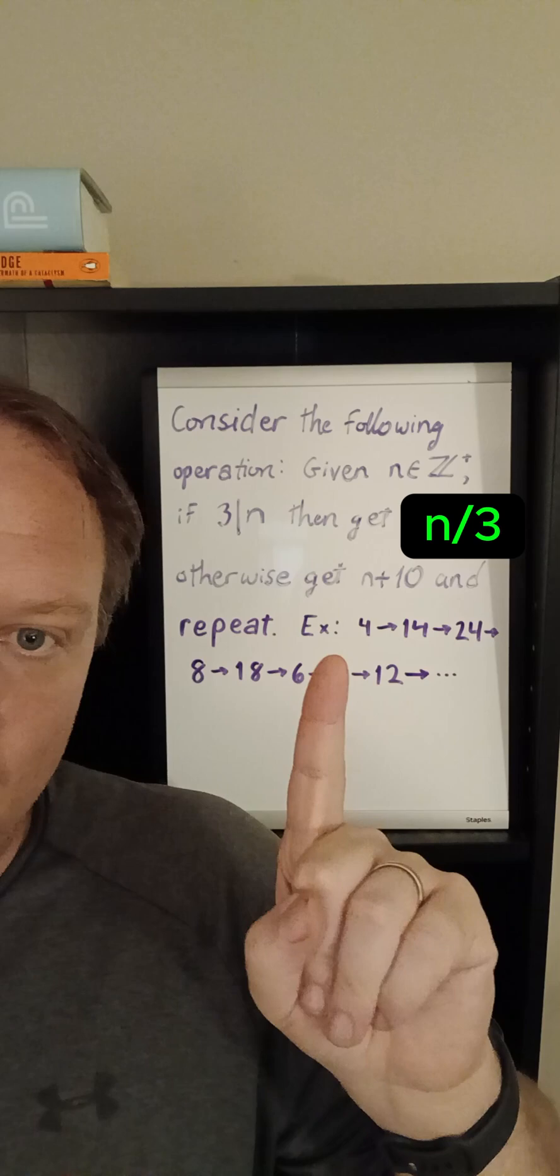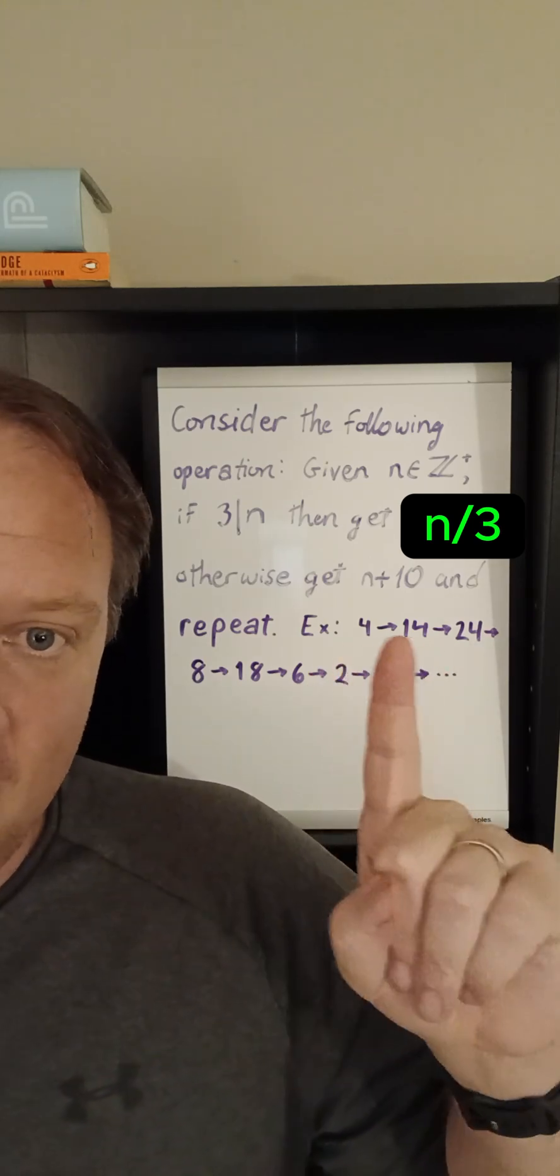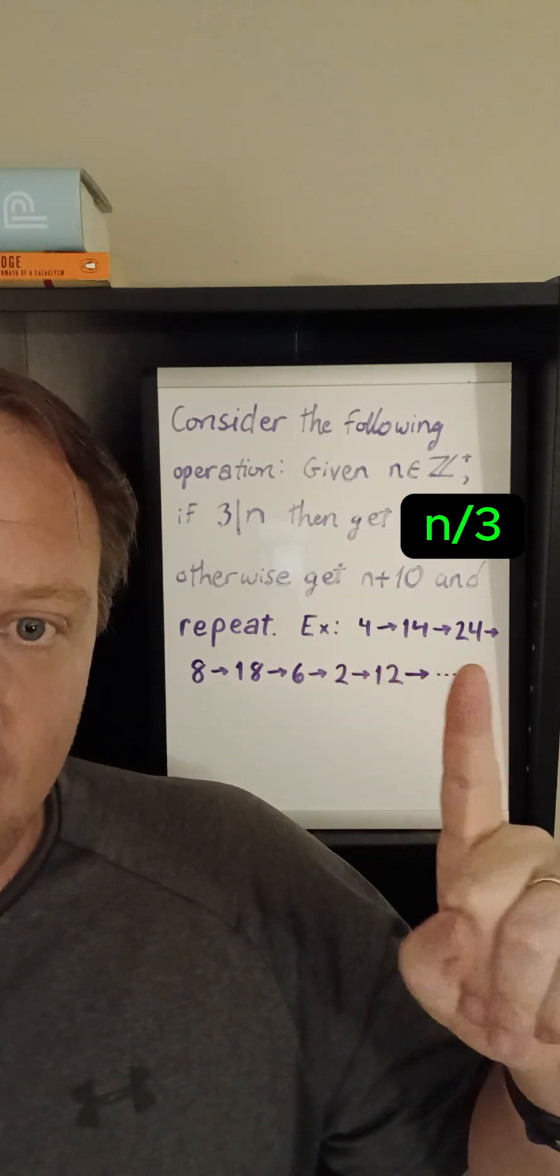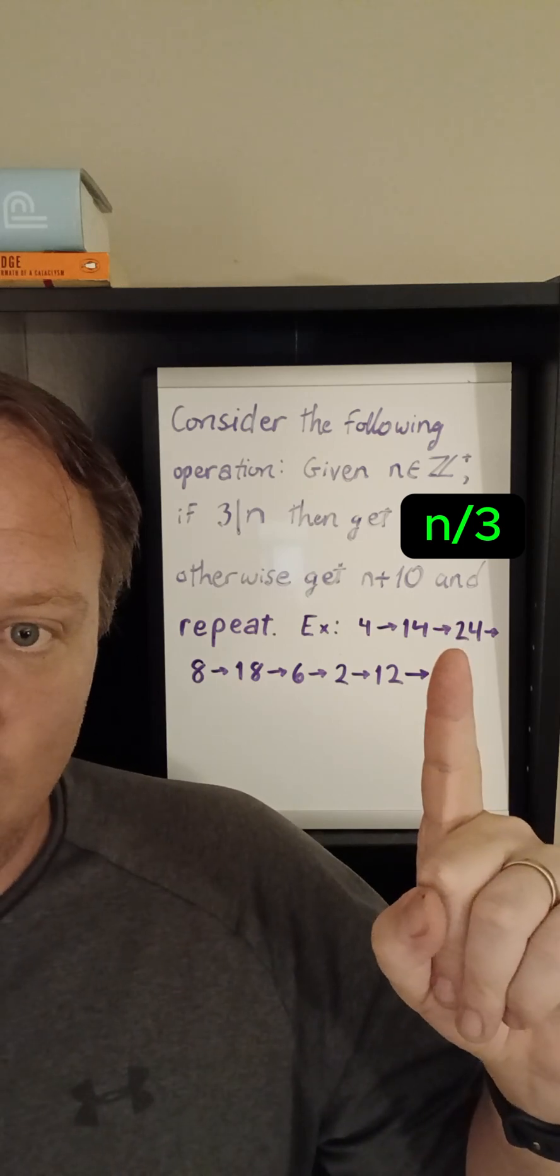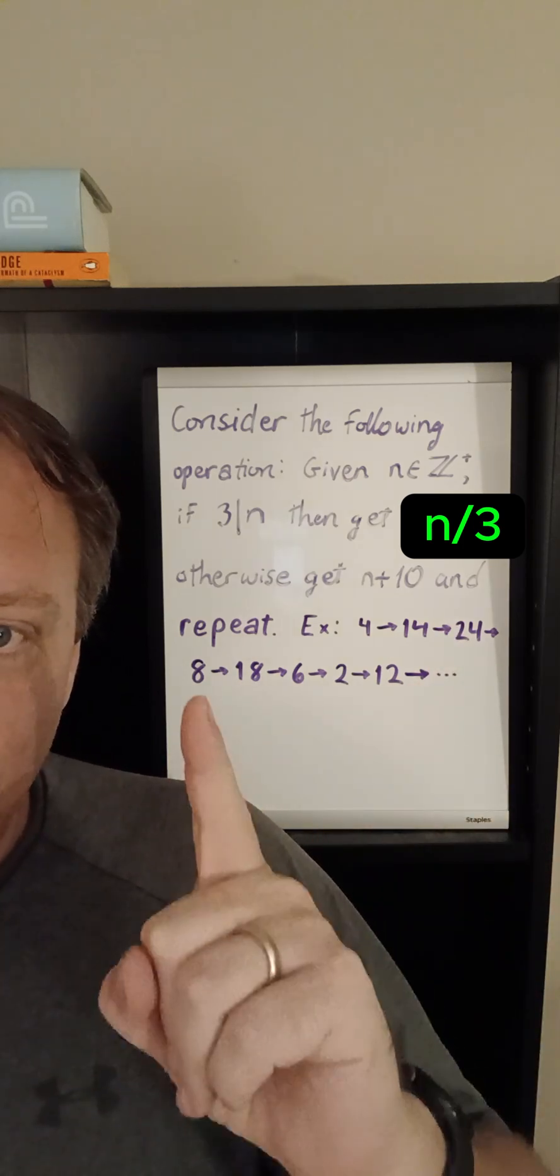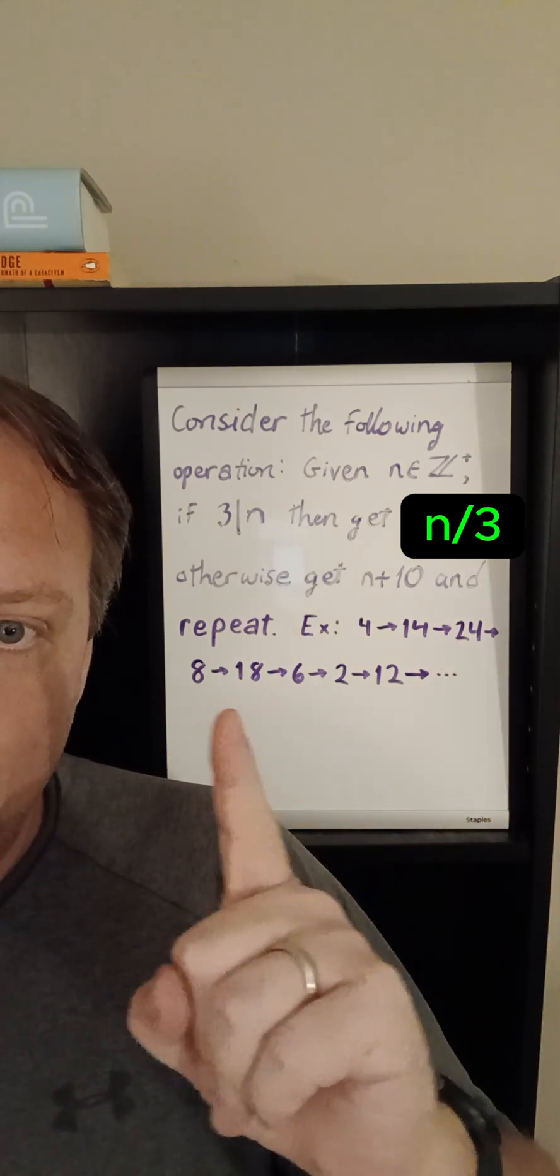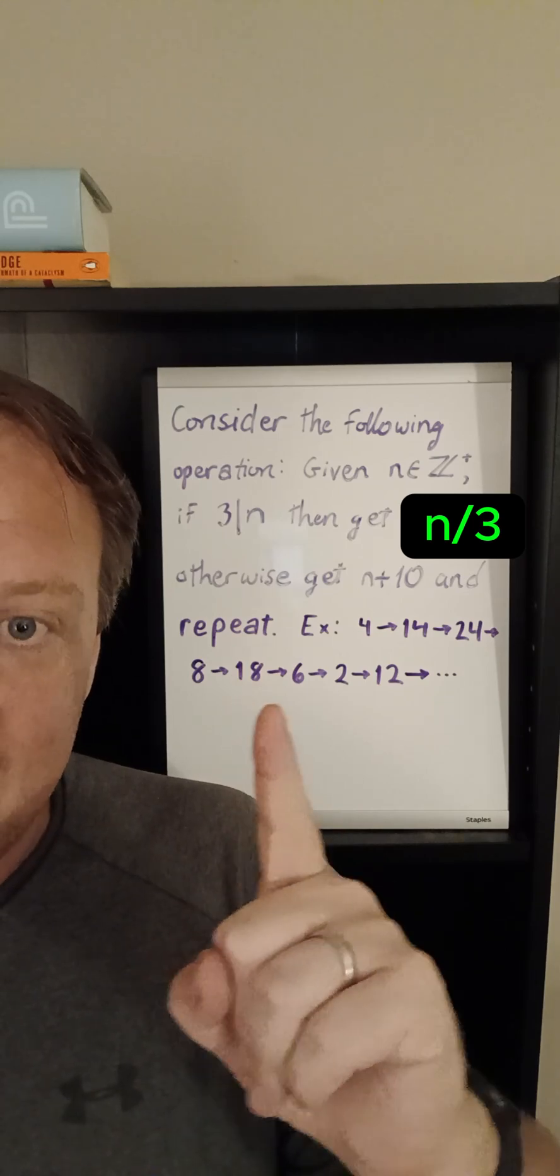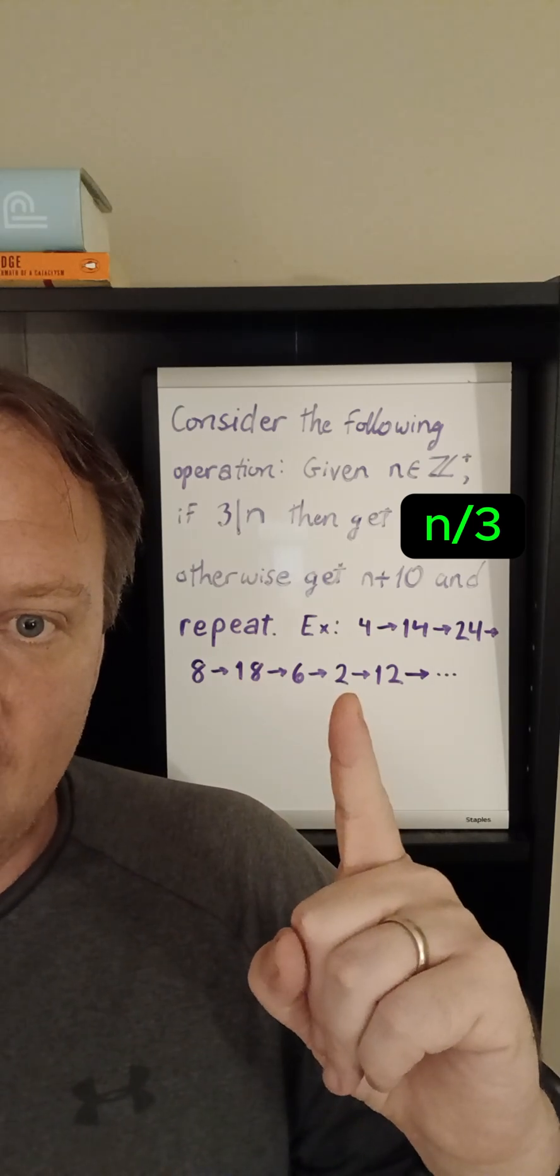So imagine that you start from 4, then we produce 14 because it's not divisible by 3, then that's not divisible by 3, so we produce 24. That is divisible by 3, so we divide, but now it's not, so we go up to 18, that divides by 3, and that divides by 3.